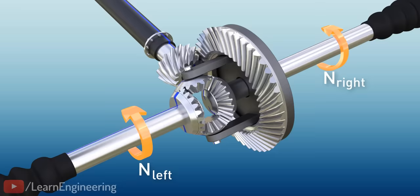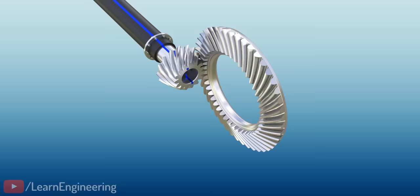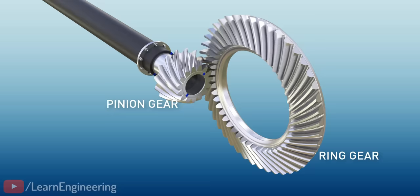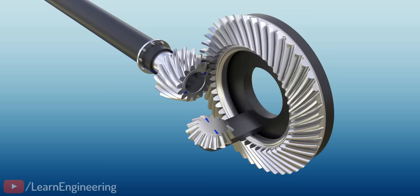Step by step, we will learn how a differential achieves this feat, using its simplest configuration. Power from the engine is transferred to the ring gear through a pinion gear. The ring gear is connected to a spider gear, which is at the heart of the differential. The spider gear is free to rotate in two different ways: one along the ring gear, and two on its own axis.